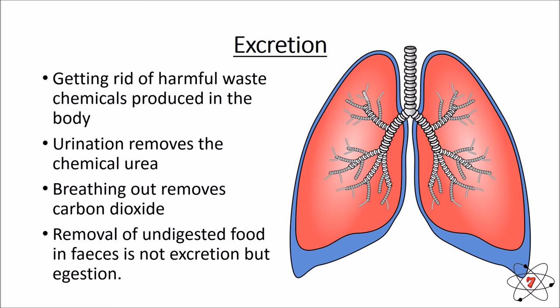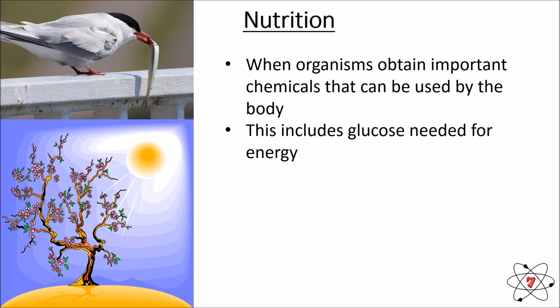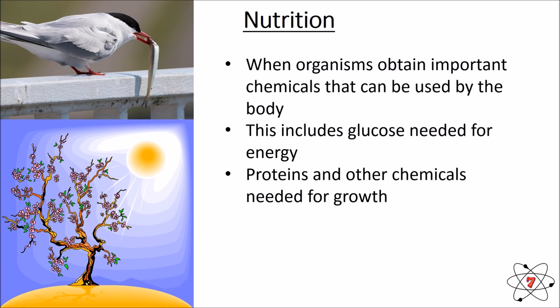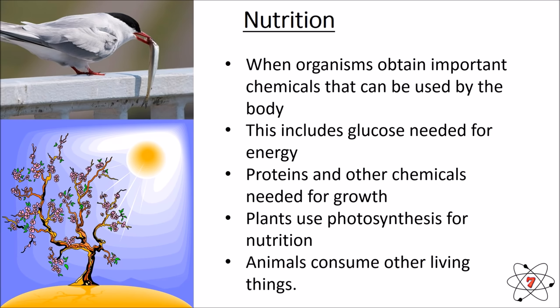Our final life process is nutrition — your body's way of getting important chemicals required to survive. The chemicals taken in through nutrition are used for the other life processes; without them we couldn't have respiration and we would not be alive. Animals get their nutrition by eating other living things — other animals, plants or fungi. Plants use a very different method called photosynthesis, which turns light from the sun, carbon dioxide and water into glucose and oxygen, and that glucose can be used in respiration for energy.